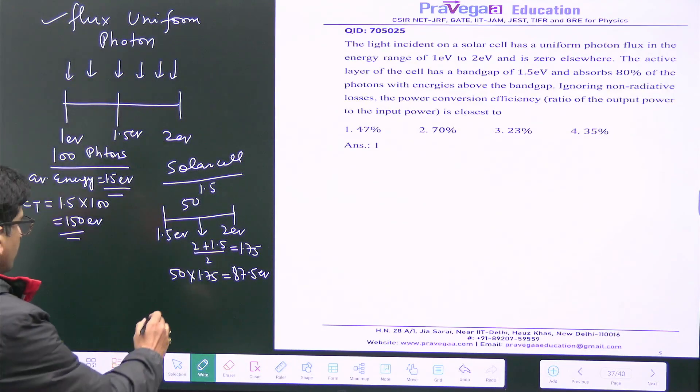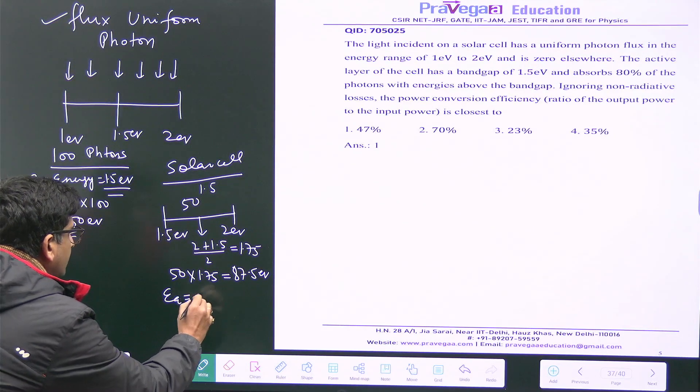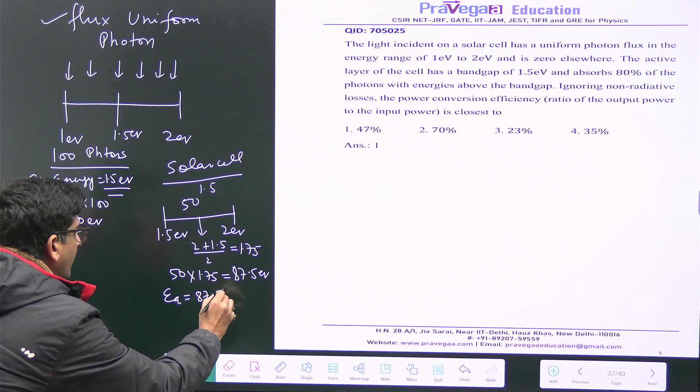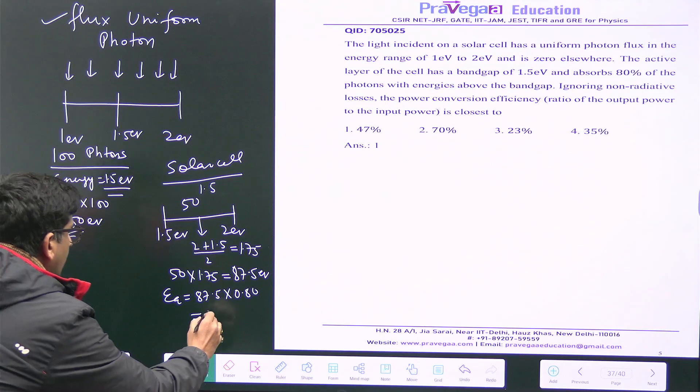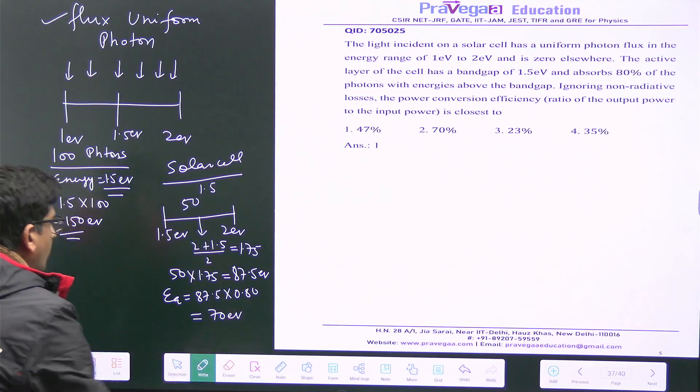But out of this, the efficiency is only 80 percent. So what is the energy that is absorbed? That is 87.5 into 0.80, which is 70 electron volt. If you multiply this, you will get 70 electron volt.